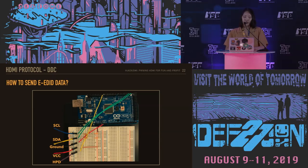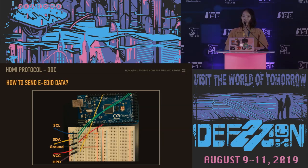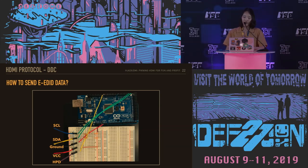We used an Arduino to transmit the EDID data directly. You can use other devices, but the Arduino supports I2C slave mode more easily compared to a Raspberry Pi. You can connect the resistors and wires to each pin as shown in the picture. The wires connected to the breadboard are, in order: SCL, SDA, ground, VCC, and HPD — and each line is connected to the pin that is mapped in the HDMI connector. With this connection, the hardware preparation is finished.